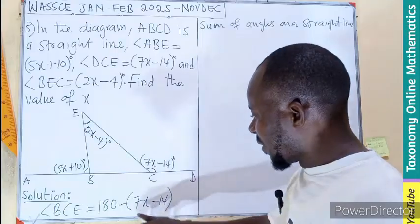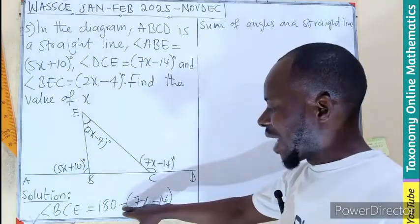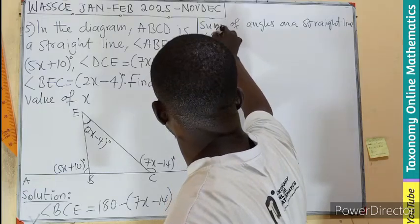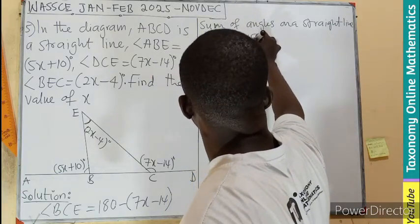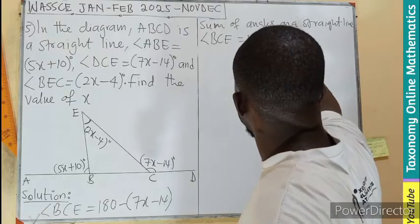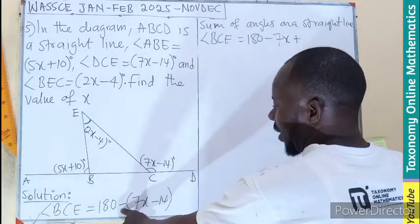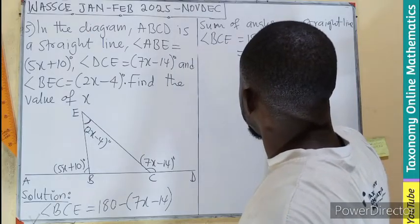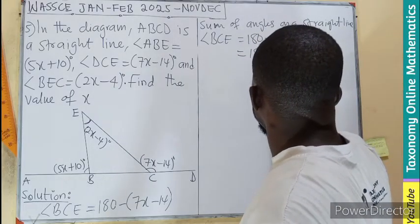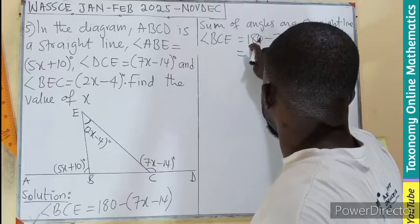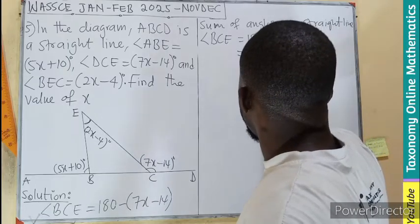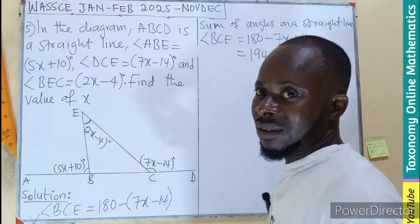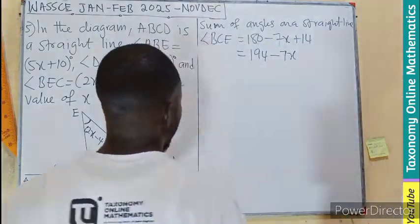We can simplify for that since we have two terms in the bracket affected by this negative. So that becomes angle BCE becomes 180 minus 7x plus, you know, negative negative becomes positive 14. That'll be 180. Let's add it together. This and these add together will give you 194 minus 7x. So let's keep that in mind.